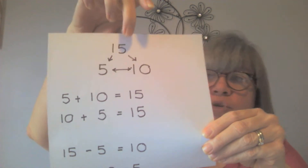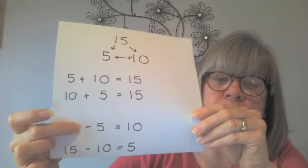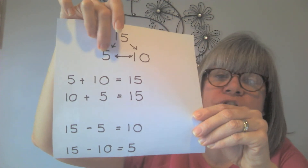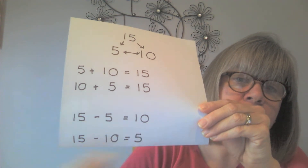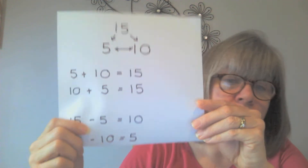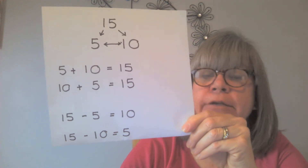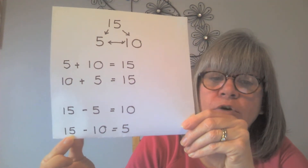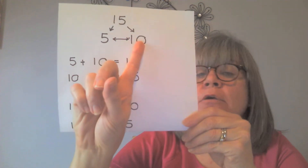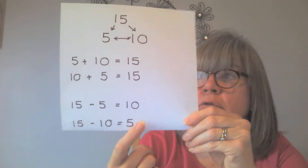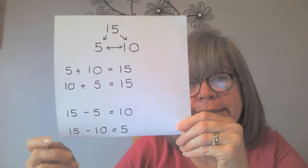You can also do the related takeaway facts using the very same numbers. When you do subtraction, always start with the whole — the biggest number. 15 take away 5 leaves the other part, 10. Then the other related fact: 15 take away 10 leaves the other part, 5. All these facts go together — they're all related because they use the same numbers.